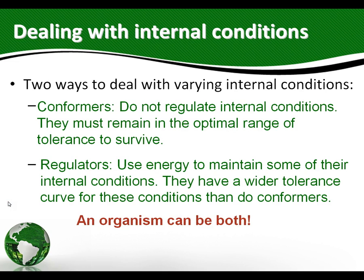It's important to note that an organism can be a conformer in one area and a regulator in another. Cold-blooded animals are conformers when it comes to temperature, but they may be regulators when it comes to the amount of water in their system. You have to be very careful and look at the specific abiotic factor being discussed, and decide whether or not that organism can regulate that factor — because organisms are often both, depending on the abiotic factor. And that's it for the introduction to ecology.